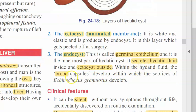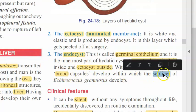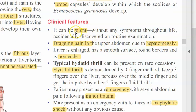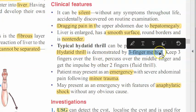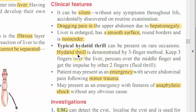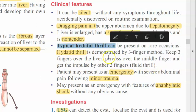Inside the endocyst you will have brood capsules with scolices. Now the clinical features: you can have a hydatid cyst in your liver and it can be silent and asymptomatic. But you can have dragging pain in the upper abdomen because the liver will be a little enlarged. The liver will have a smooth surface, round borders, and will be non-tender. There is dragging pain, but if you touch there, there will be no pain.